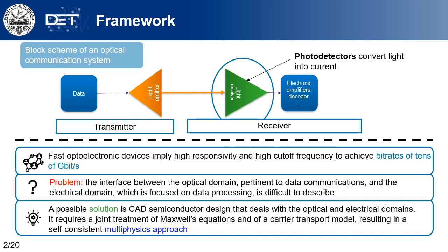In an optical communication system, photodetectors are placed at the receiver's side. Their role consists in converting light, which contains the information that has been transmitted, into a current. For a photodetector, fast means high responsivity and high cut-off frequency, which will be introduced as figures of merit in the following slides.